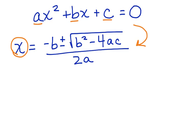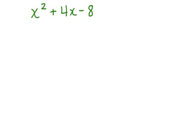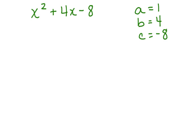Let's look at an example: x squared plus 4x minus 8. In this equation, a is equal to 1, b is equal to 4, and c is equal to negative 8.